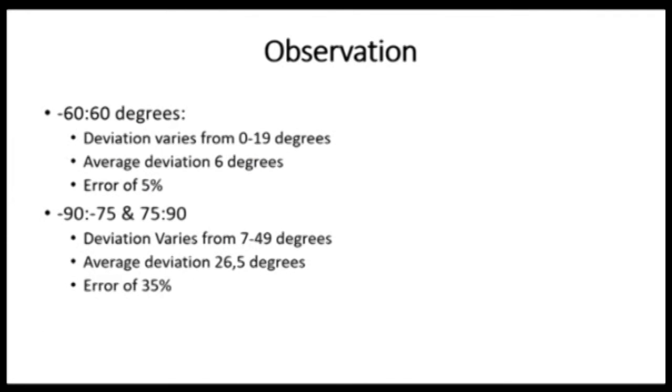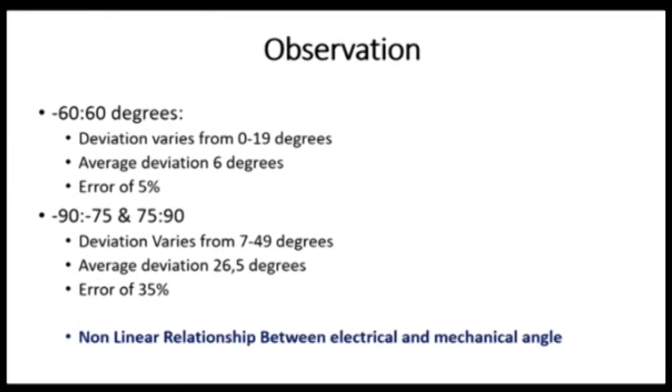However, it is noted that by looking at just the inner range, the deviation is 6 degrees with a 5% error, which multiplies by a factor of approximately 4 to the outer range. This is because there is a non-linear relationship between the electrical and mechanical angle.